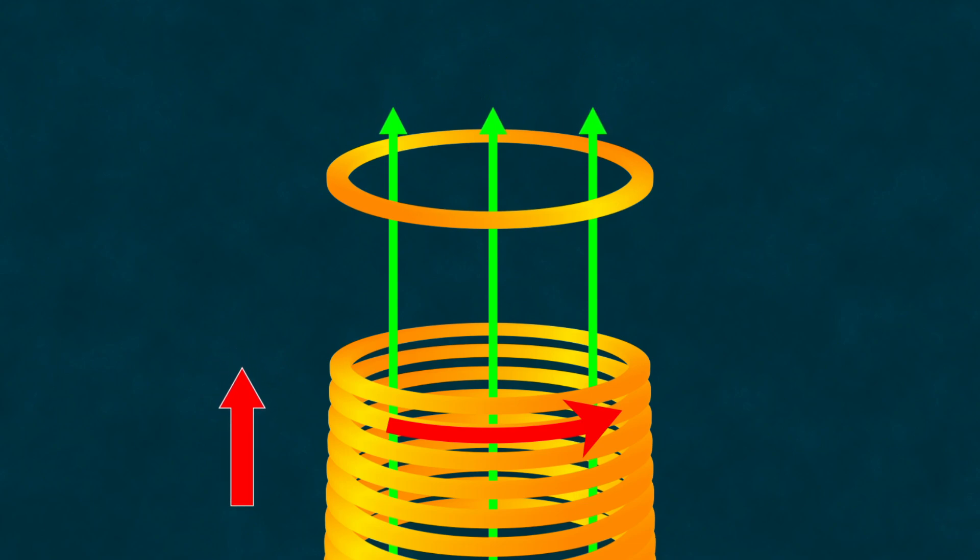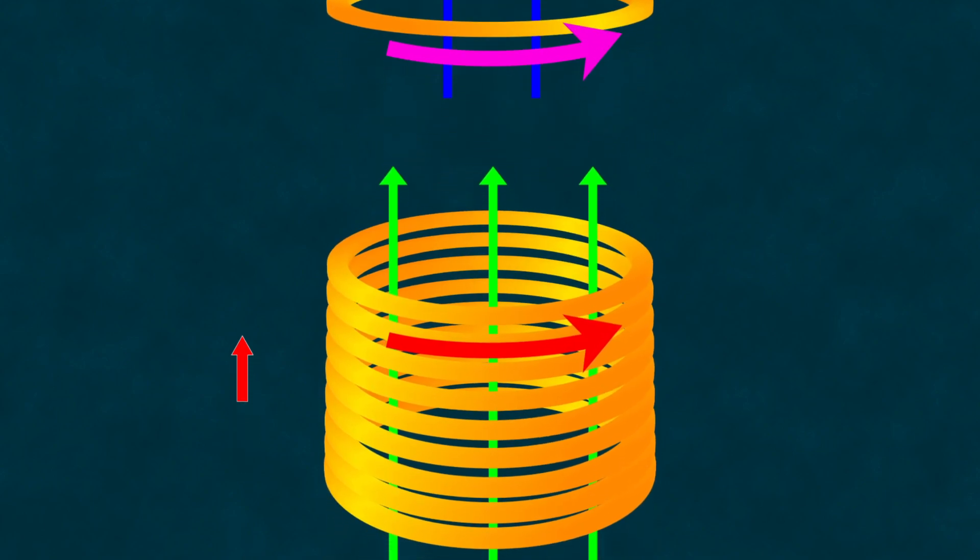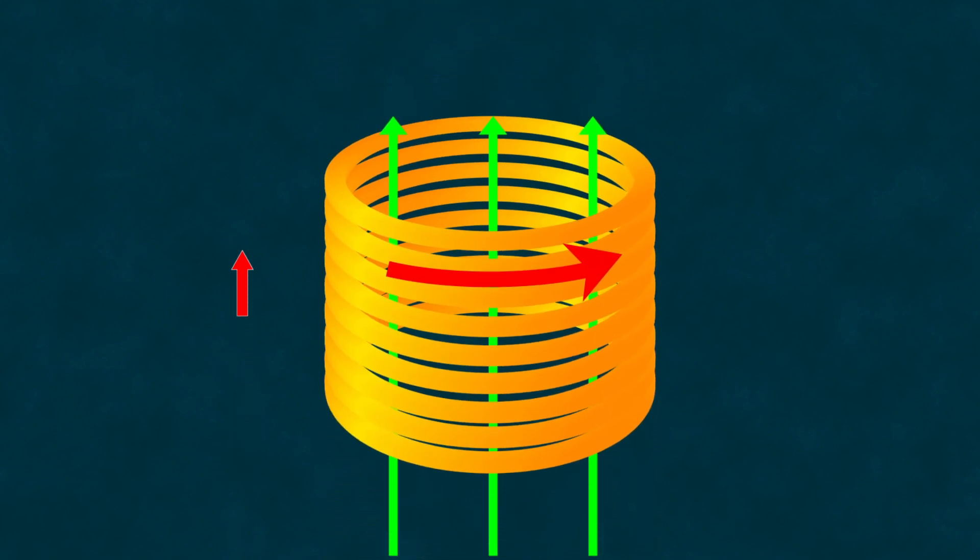Conversely, when the current in the solenoid decreases, thus reducing the magnetic field it creates, the induced current will flow in the same direction as the current in the solenoid. But the turns of the solenoid are also within the magnetic field they create, so the same principle applies to them. Each turn of the solenoid, being in the magnetic field created by other turns, will experience an electromotive force, EMF, of induction.